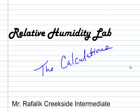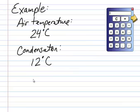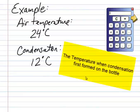Let's take a look at the calculations needed for our relative humidity lab. Let's use this as some sample data. Let's assume that our air temperature in the classroom was 24 degrees Celsius, and the condensation was 12 degrees Celsius.